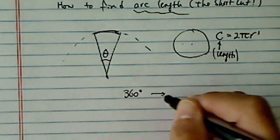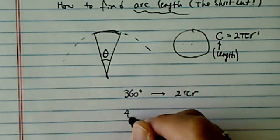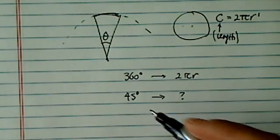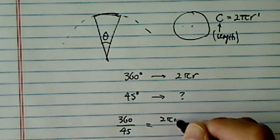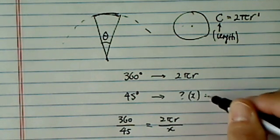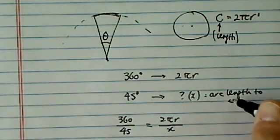For 360 degrees, you have 2 pi r. And given, let's say, 45 degrees, what's the arc length? Set up the ratio. So 360 over 45 is equal to 2 pi r over x. And x is our arc length corresponding to 45 degrees.